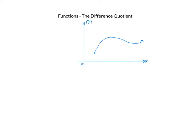Let me show you just a bit about where it comes from. Suppose I have the function shown here, and I find a couple points on the curve that represents this function. I'm going to let this first one be right here, and I'll let its x coordinate just be x, and hence its y coordinate will be f of x. And let me move just a little bit to the right — h units. So the x coordinate will be x plus h, and its y value would be f of x plus h.